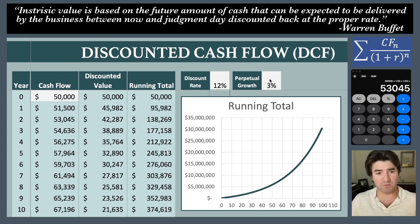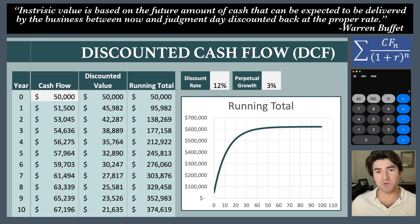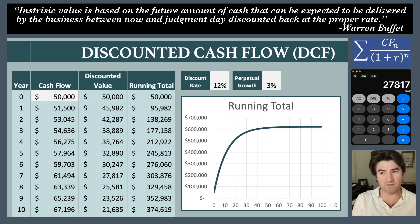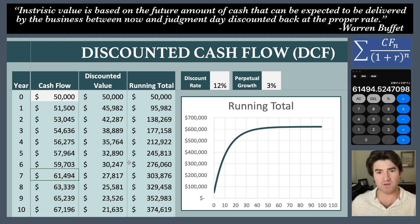At twelve percent, you can see that sixty-one thousand dollars turned into twenty-seven thousand eight hundred. To show you this in the calculator: if you had twenty-seven thousand eight hundred and seventeen dollars today and invested it at a twelve percent return for seven years, you would have sixty-one thousand four hundred ninety-four — which is that number over there. That's how that works, and that's why we use our opportunity cost for investing.